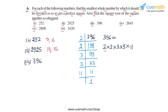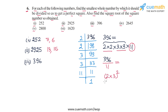Pairing up the prime factors of 396, we have a pair of 2 and a pair of 3, but 11 is left unpaired. So we divide 396 by 11 to get a perfect square. We are left with a pair of 2 and a pair of 3, written as (2 × 3)². The square root of the resulting number is 2 × 3 = 6. So we divide 396 by 11 to get a perfect square, and the square root is 6.